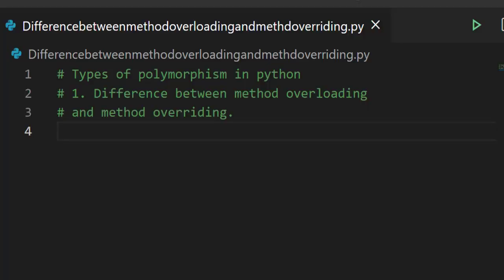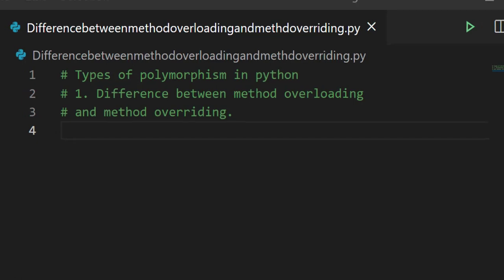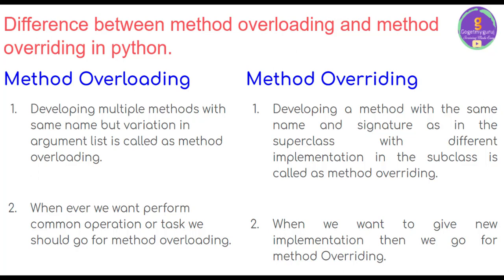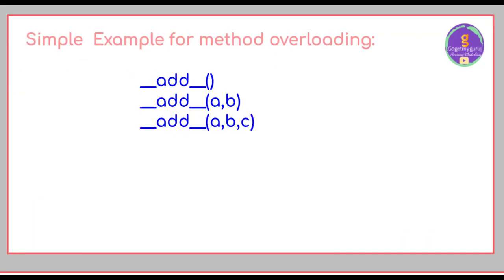Let's start with the concept of the difference between method overloading and method overriding. The first difference is: developing multiple methods with the same name but variation in argument list is called method overloading. Let's see the example for method overloading.